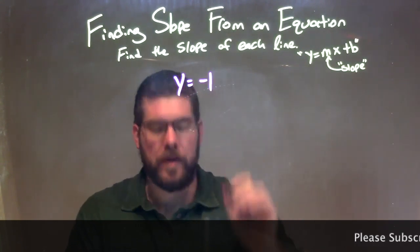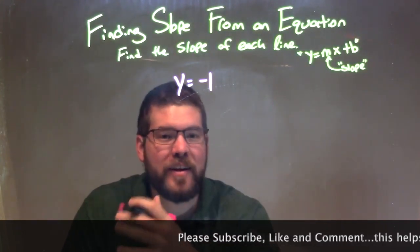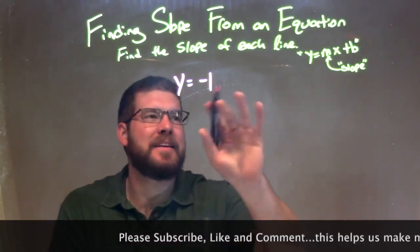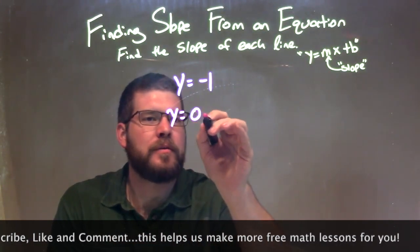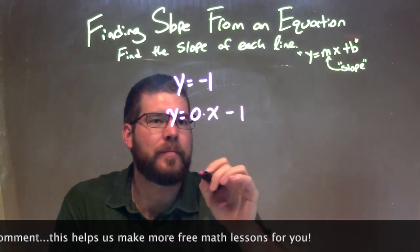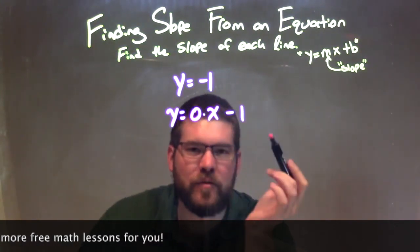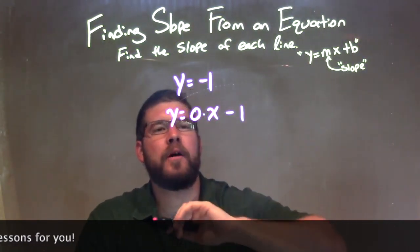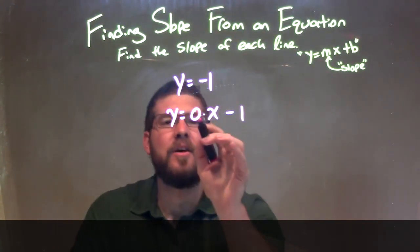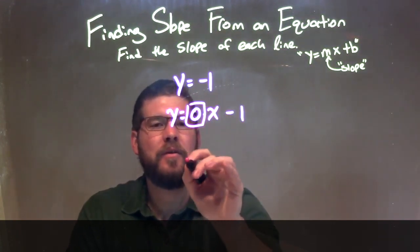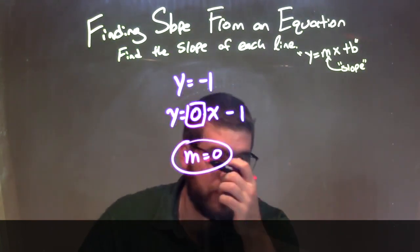y equals negative 1. If y equals negative 1, is that really in slope-intercept form? Yes, it is. Wouldn't this be the same as y equals 0 times x minus 1? Well, 0 times x is just 0, so we really have y equals negative 1 here. But this helps us see what our slope value is — the coefficient in front of x, which is 0. Our coefficient is just 0, so m equals 0. Our slope is 0, and that's like a horizontal line.